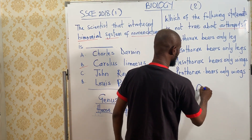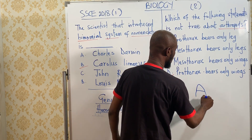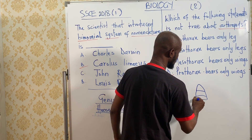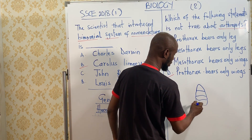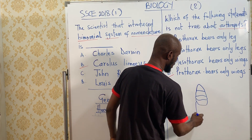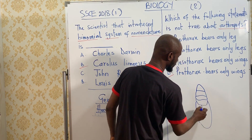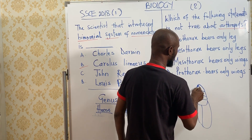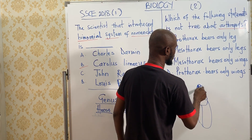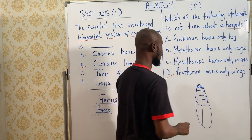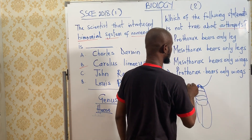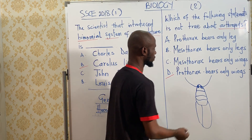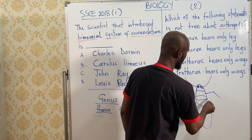Let's give an example. We have the head, we have the thorax — the thorax is the chest — and then we have the abdomen. The head has what is called the compound eye, and then we have the antenna attached to the head. Then we draw the walking legs.